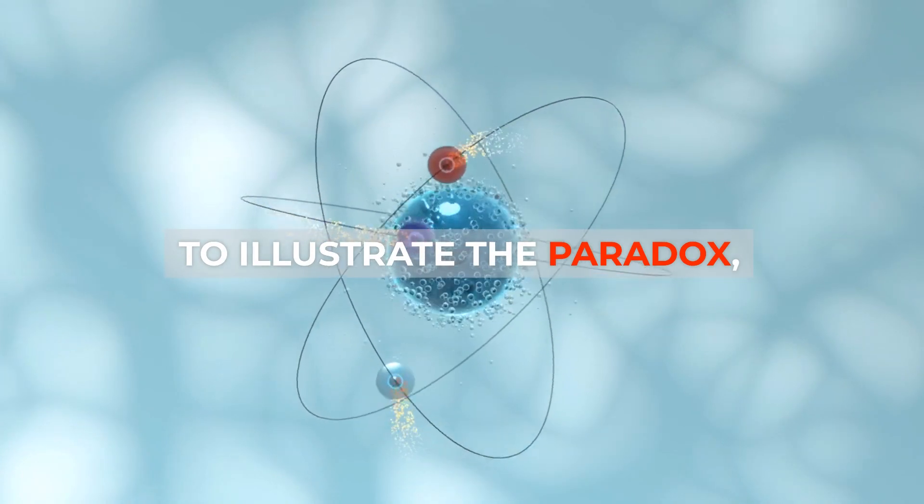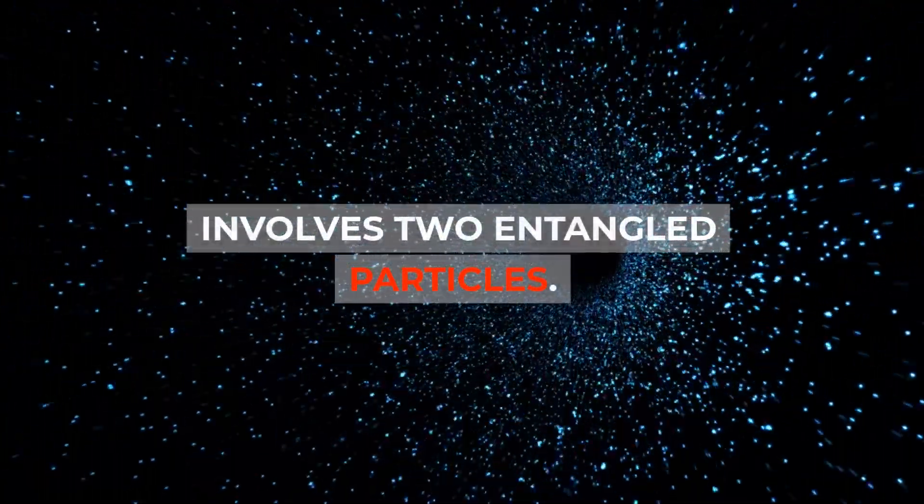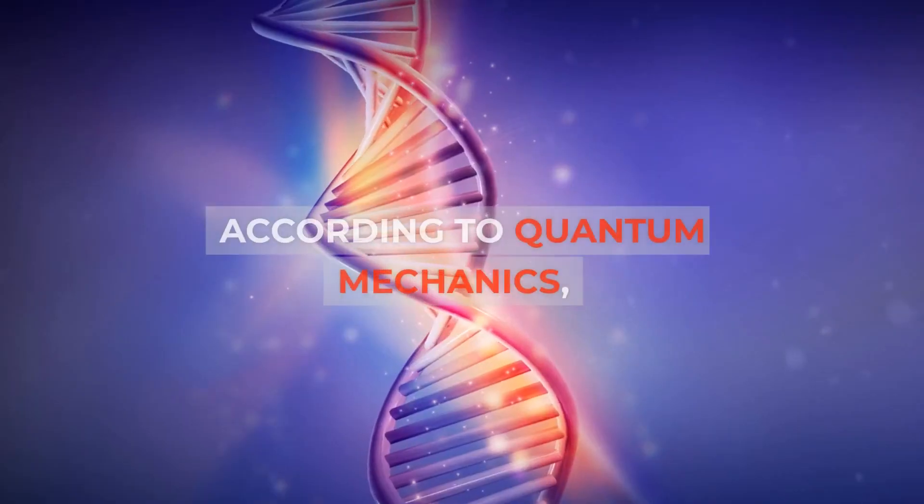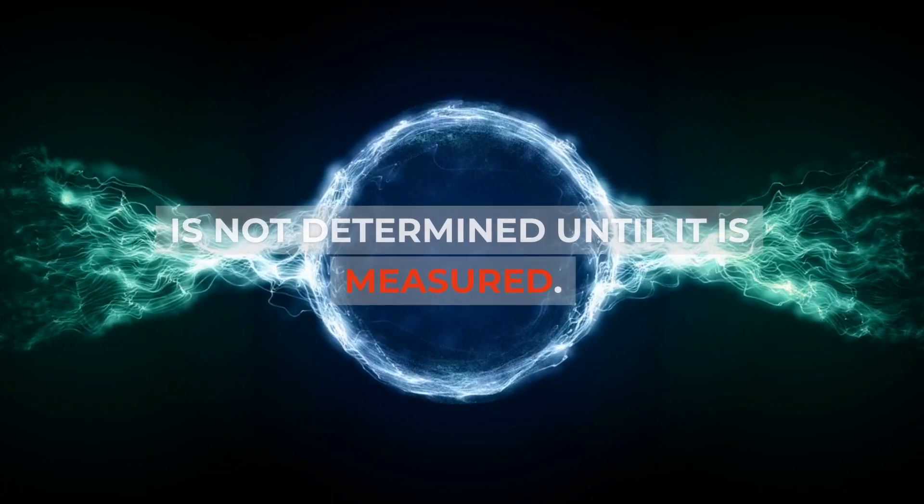To illustrate the paradox, the EPR thought experiment involves two entangled particles. Let's consider a pair of electrons with opposite spins. According to quantum mechanics, the spin of each particle is not determined until it is measured.